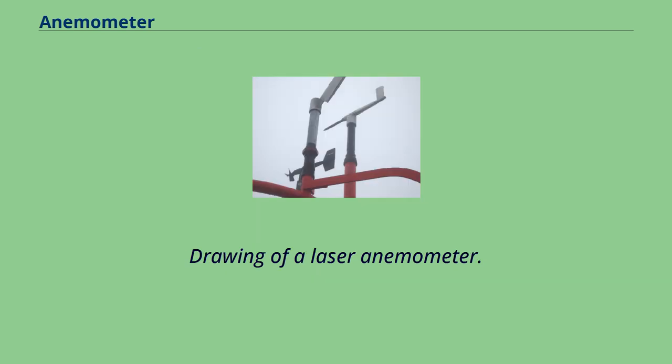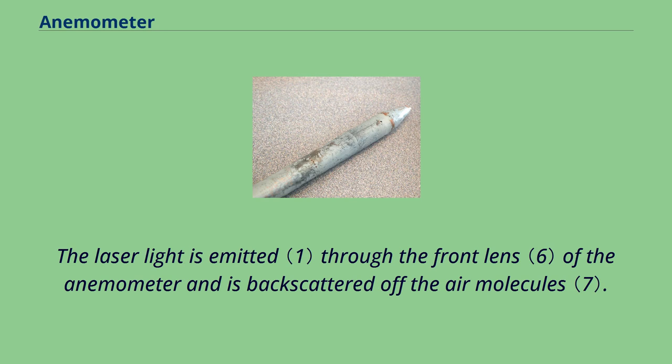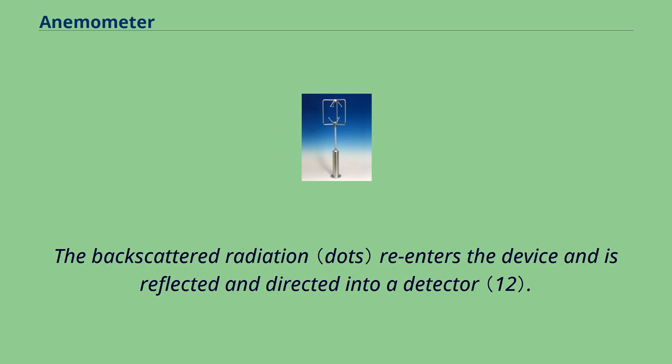Drawing of a laser anemometer. The laser light is emitted through the front lens of the anemometer and is backscattered off the air molecules. The backscattered radiation re-enters the device and is reflected and directed into a detector.